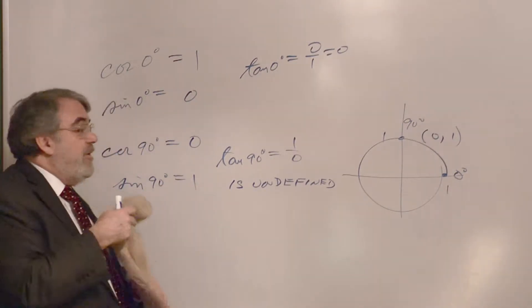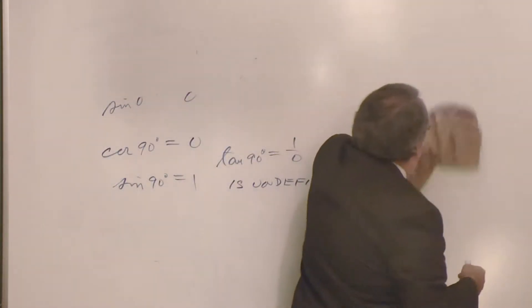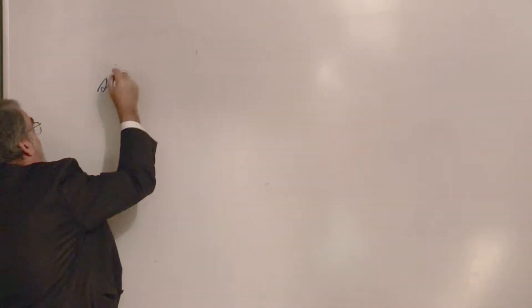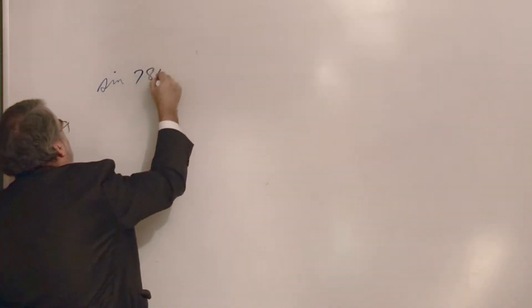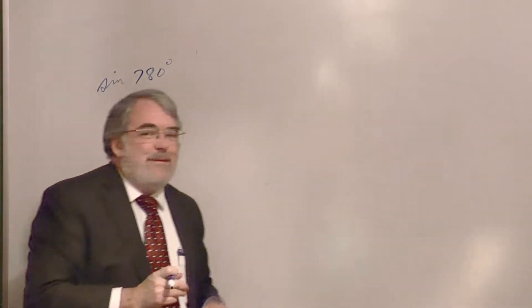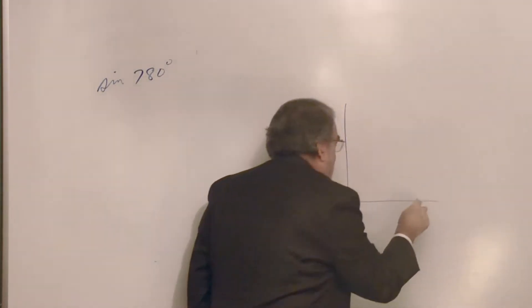Now, let's expand the idea, and let's take a couple laps around the circle and see what happens here. So, let's work out, for example, the sine of, how about the sine of 780 degrees. Alright. Where is the world, where in the world of 780 degrees? Alright. Well. Okay.